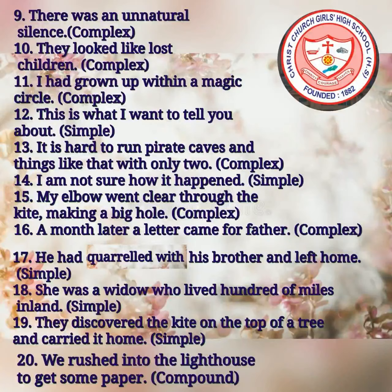Eleven: 'I had grown up within a magic circle' — turn into a complex sentence. Twelve: 'This is what I want to tell you about' — transform into a simple sentence. Number thirteen: 'It is hard to run pirate caves and things like that with only two' — turn into a complex sentence. Number fourteen: 'I am not sure how it happened' — turn into a simple sentence. Number fifteen: 'My elbow went clear through the kite, making a big hole' — transform into a complex sentence. Number sixteen: 'A month later, a letter came for father' — turn into a complex sentence. Sentence seventeen: 'He had quarrelled with his brother and left home' — transform into a simple sentence.